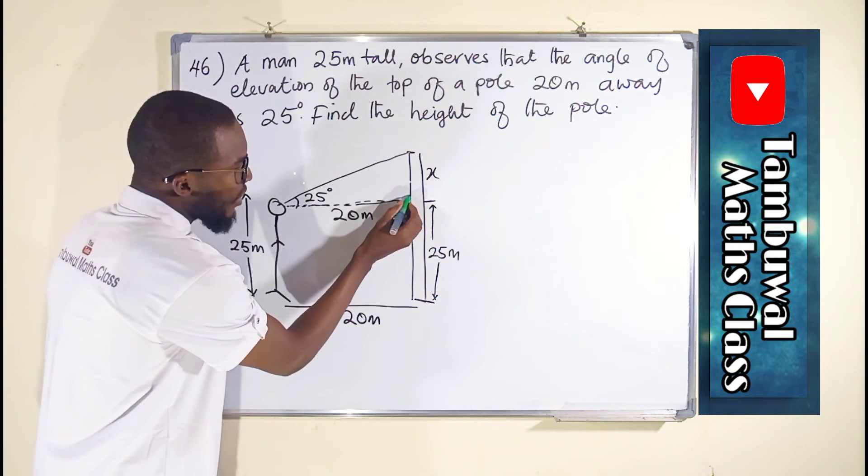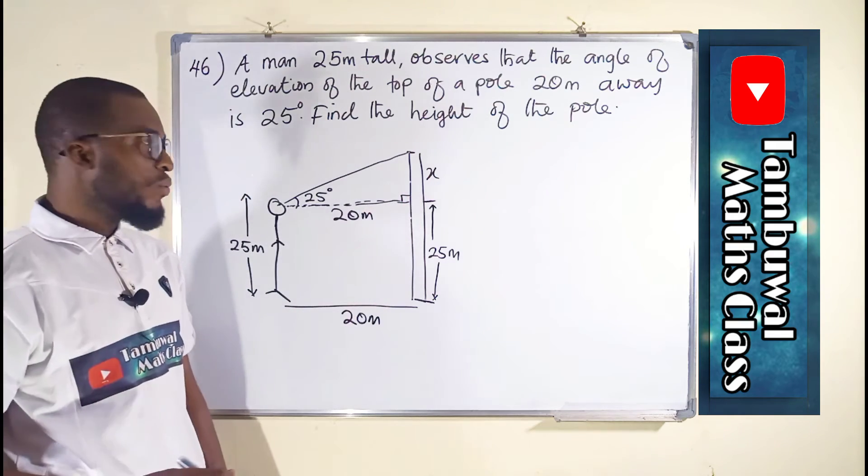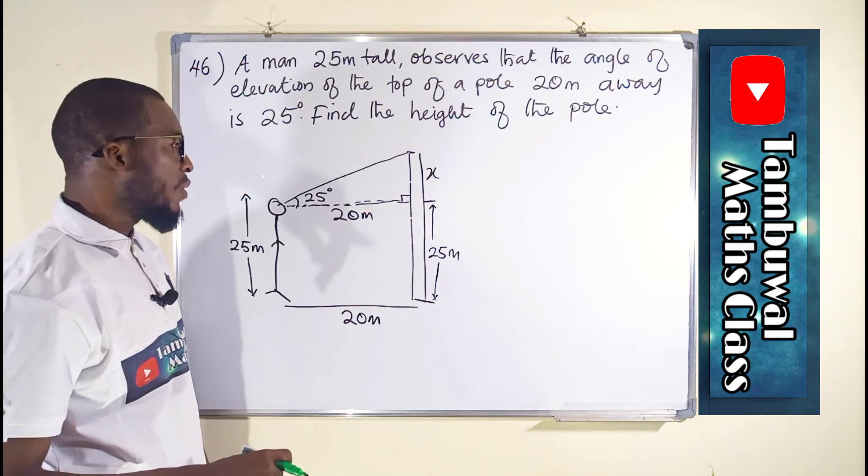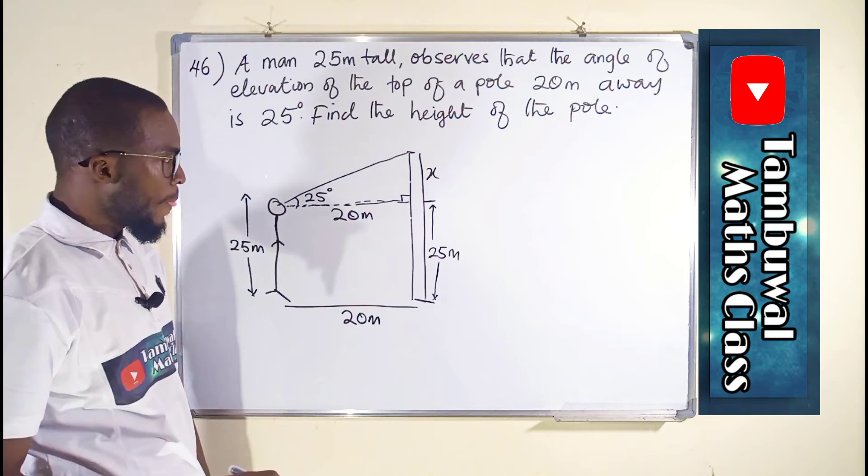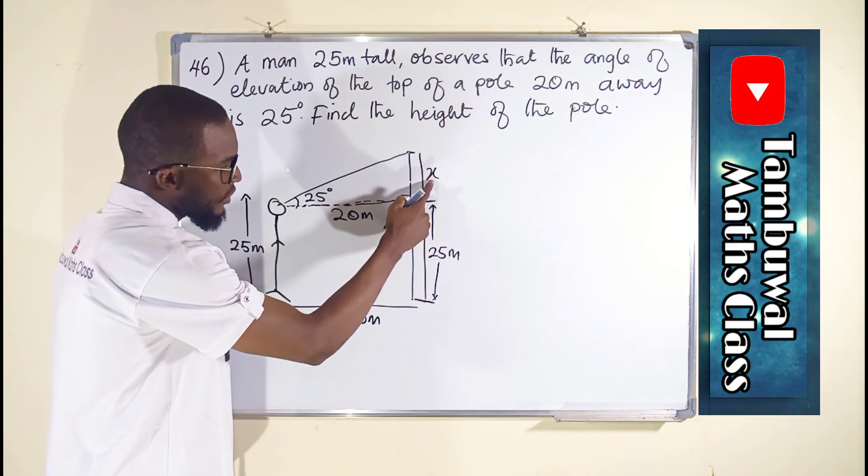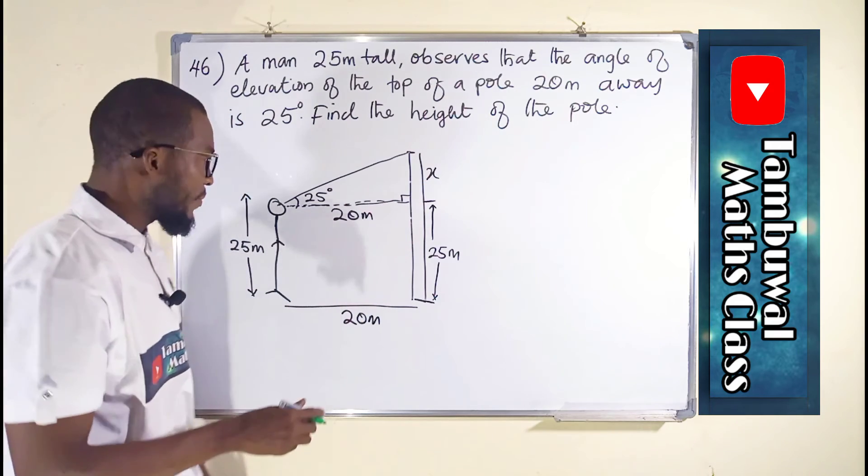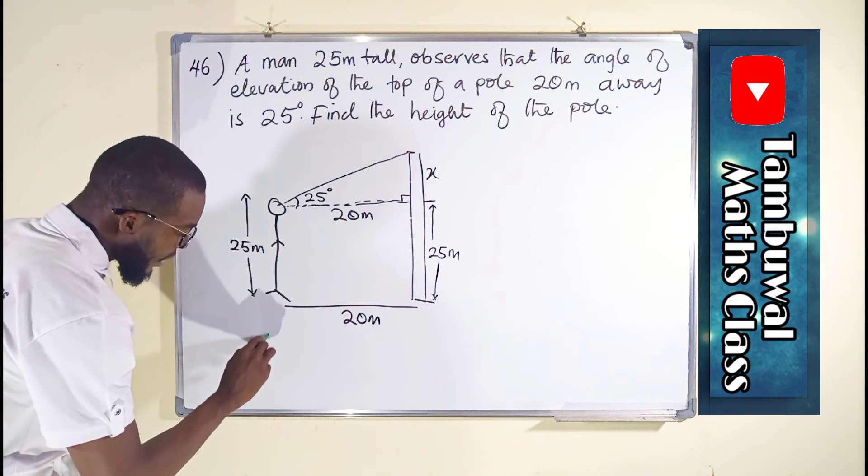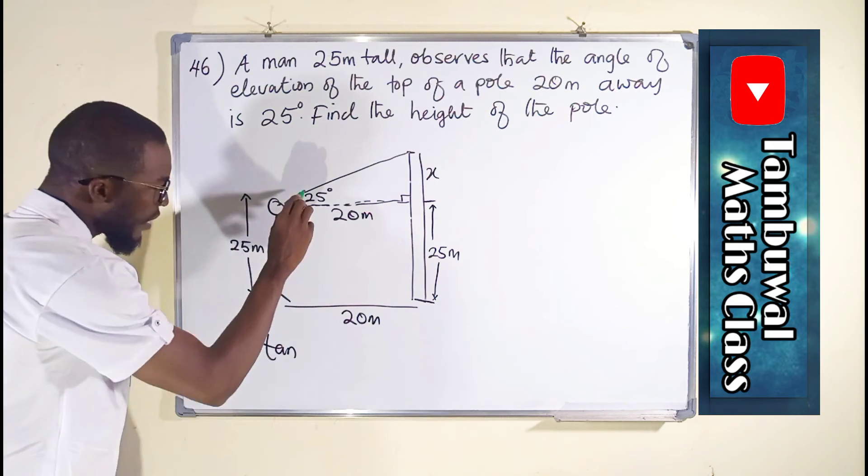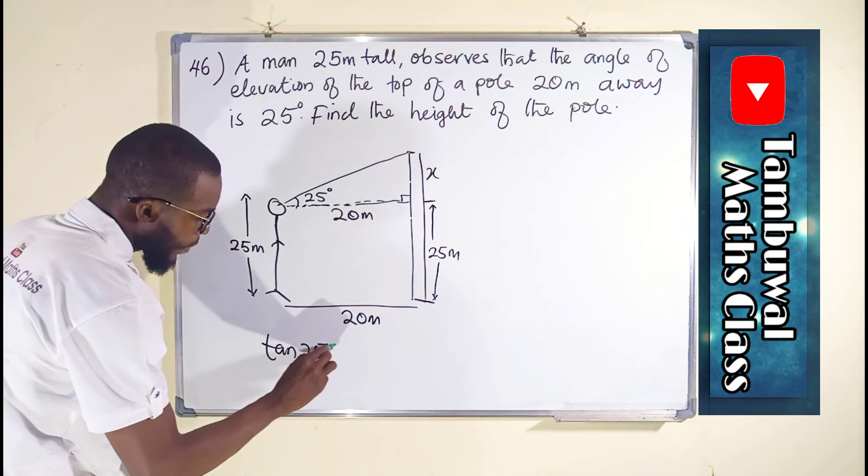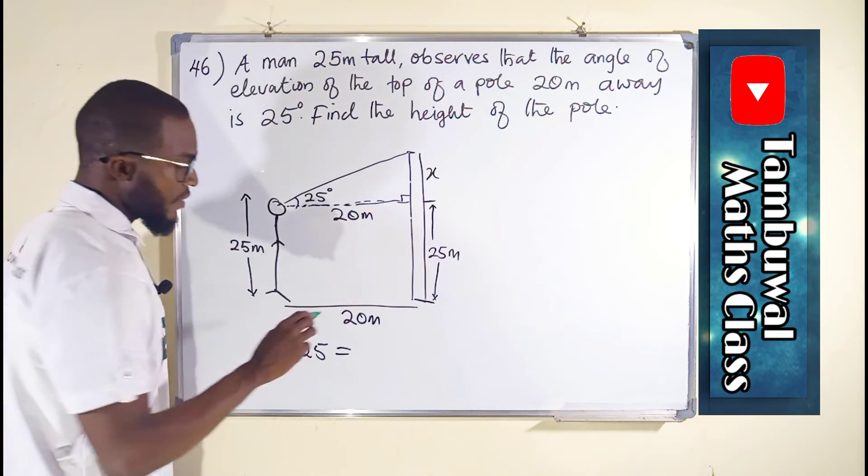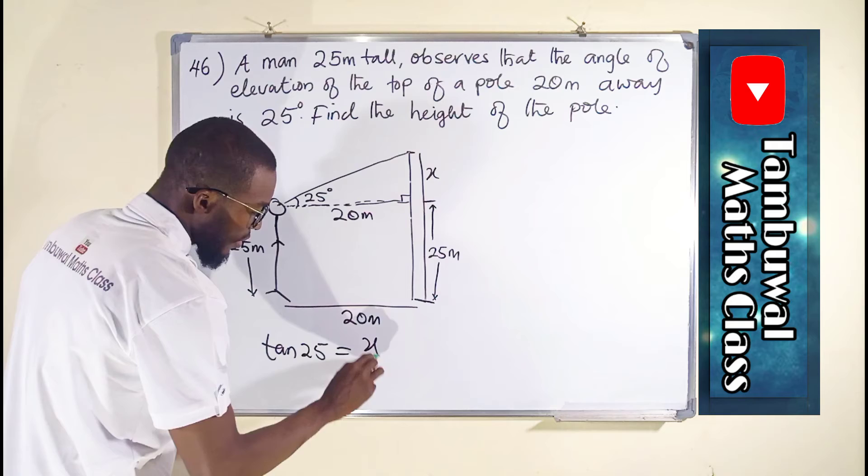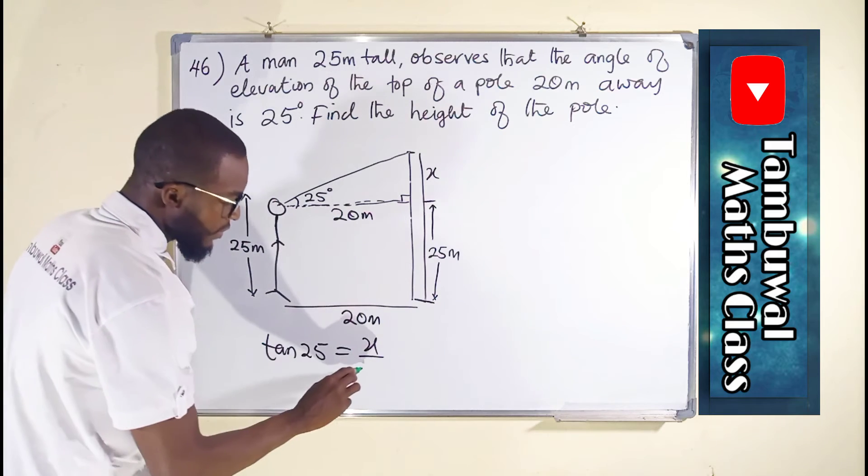This is a right angle triangle, which we can apply one of the ratios to find the missing side. The relationship between opposite and adjacent is tan. So therefore, tan of this angle, 25, will be opposite divided by the adjacent. And opposite is X divided by the adjacent, which is 20.